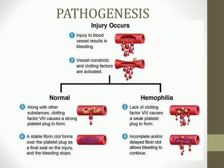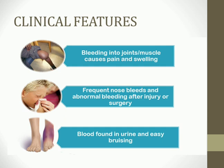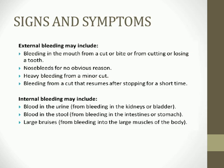Clinical features include: bleeding into the joints (synovial joints), causing pain and swelling; bleeding into muscles; frequent nosebleeds; abnormal bleeding after injury or surgery; blood in the urine due to bladder or kidney bleeding; and easy bruising.